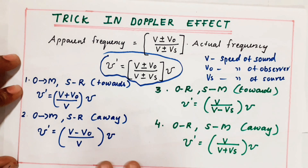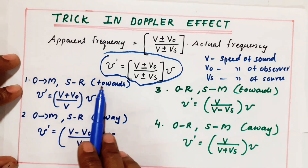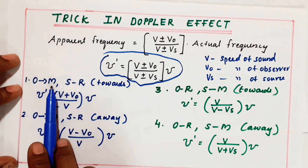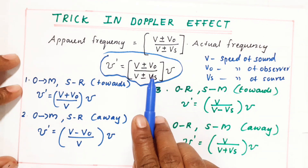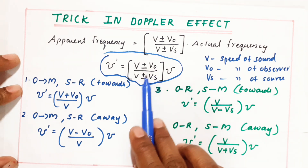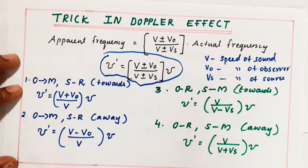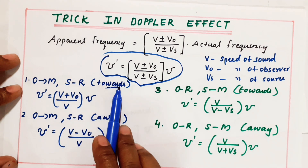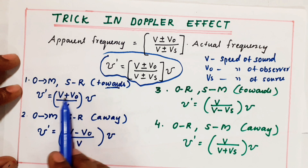Case one: observer is moving, source is at rest, and observer is moving towards the source. Since source is at rest, the V_S term won't come in the denominator. When moving towards the source, we should get more frequency. So the numerator should be plus: V plus V_O by V, into nu.